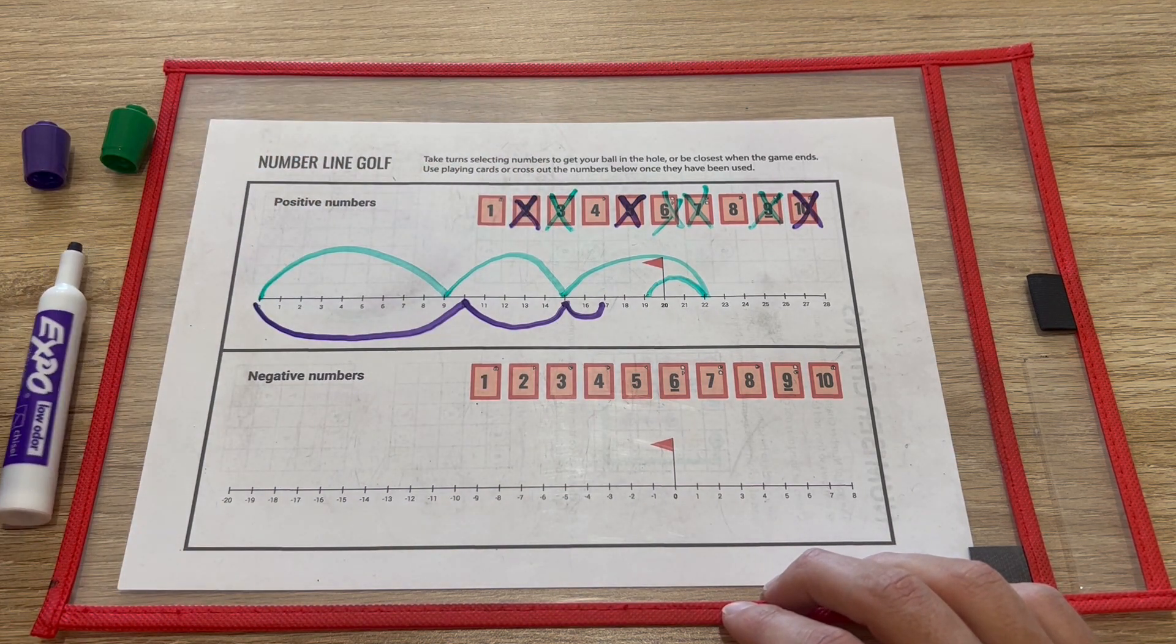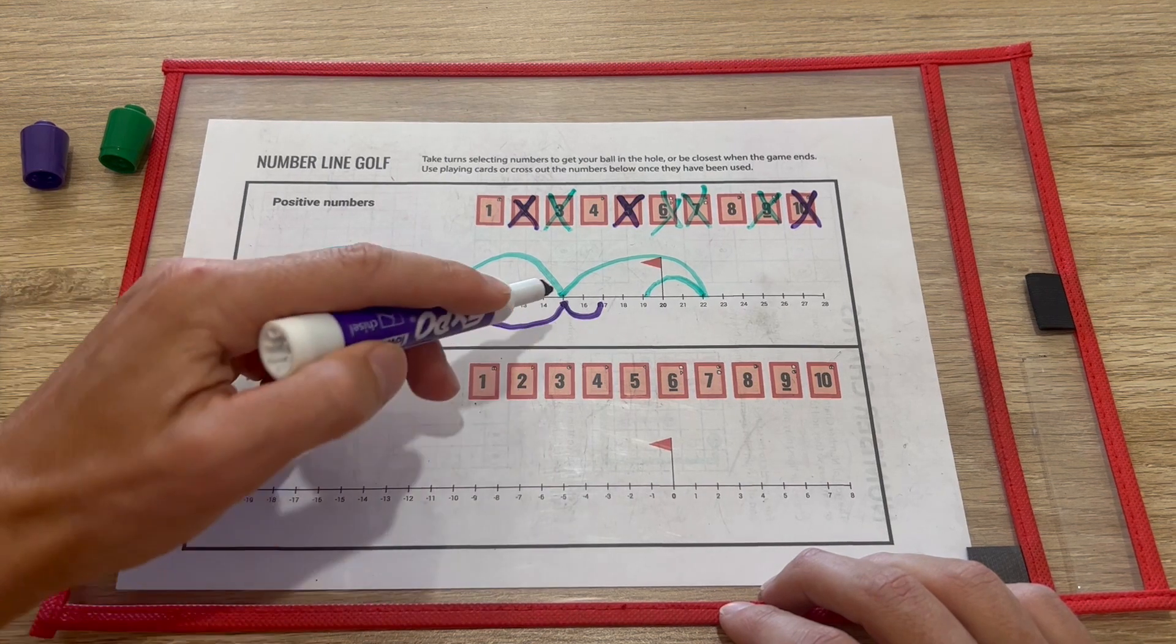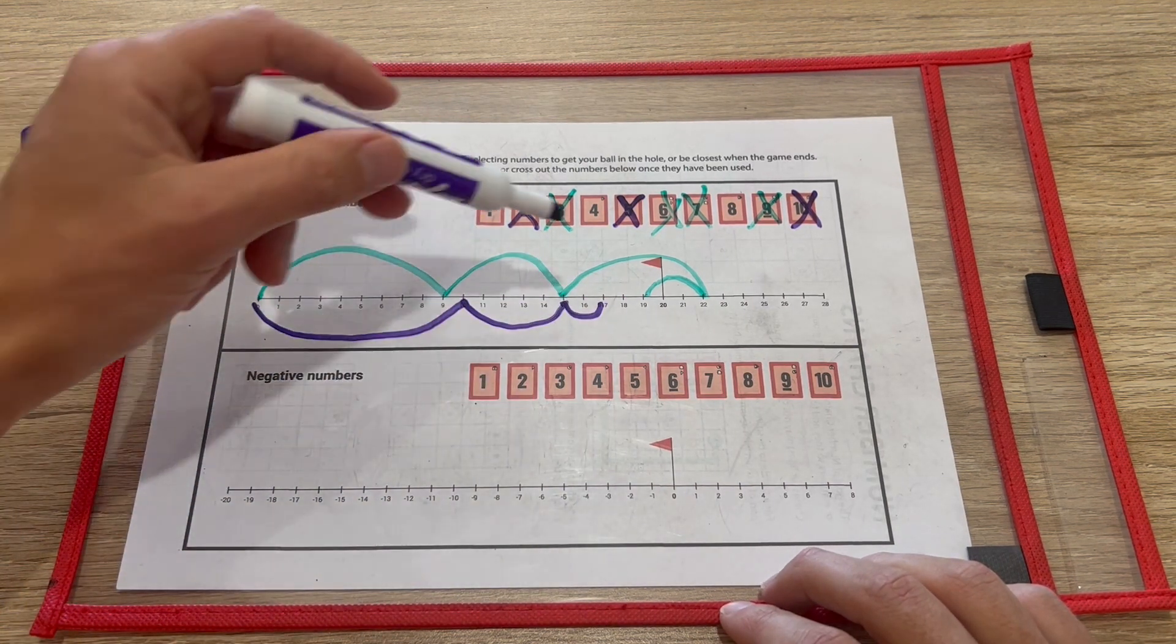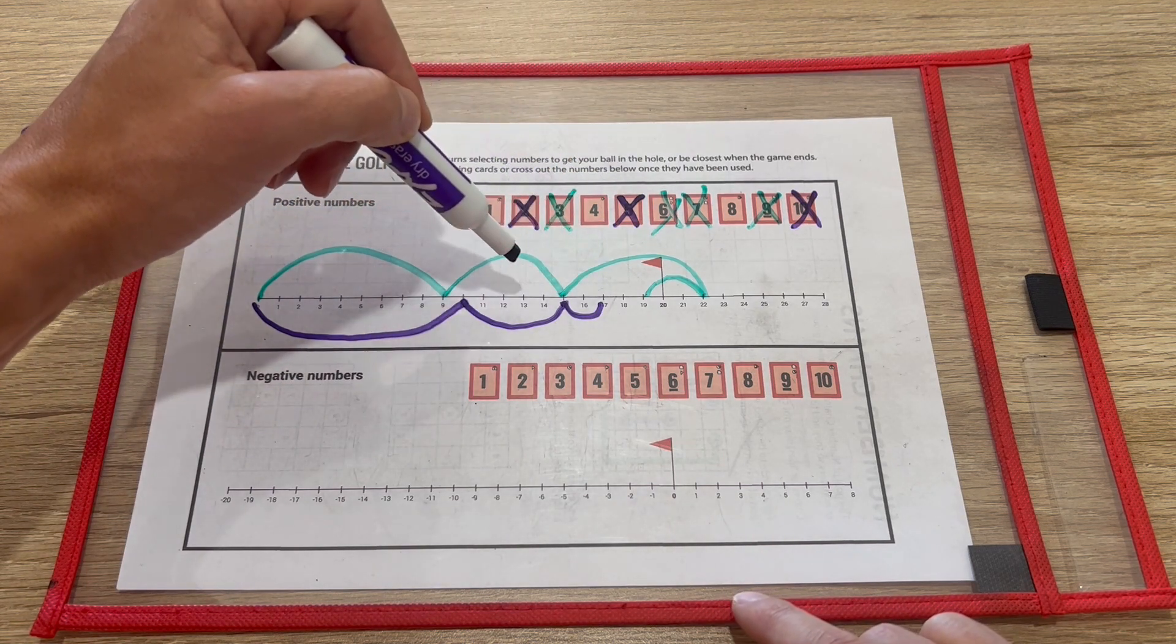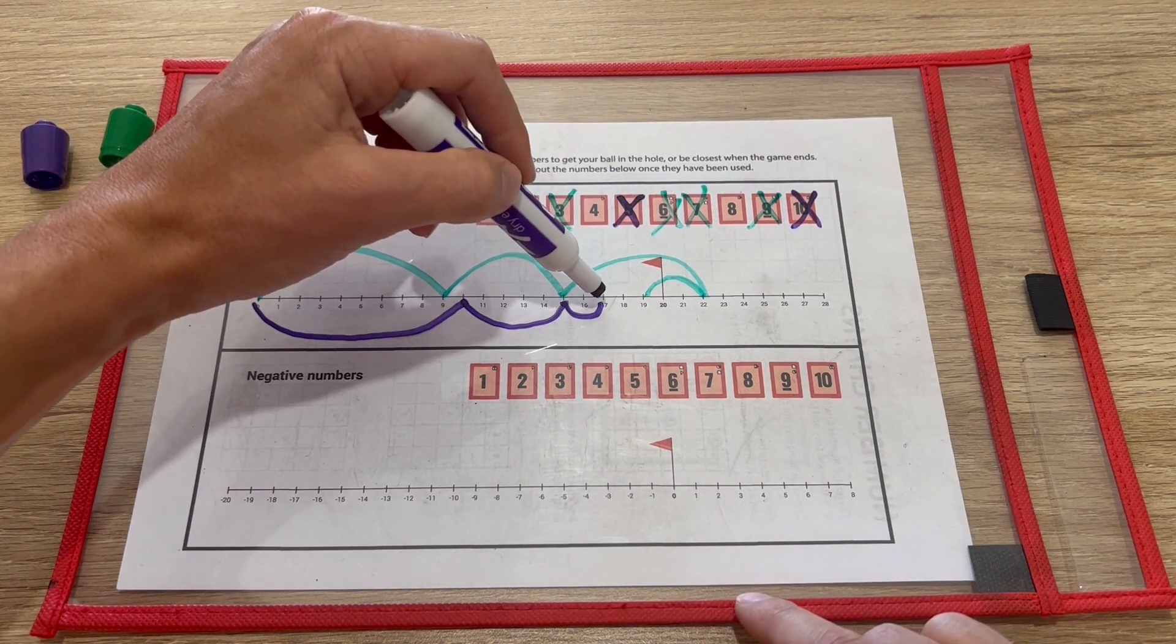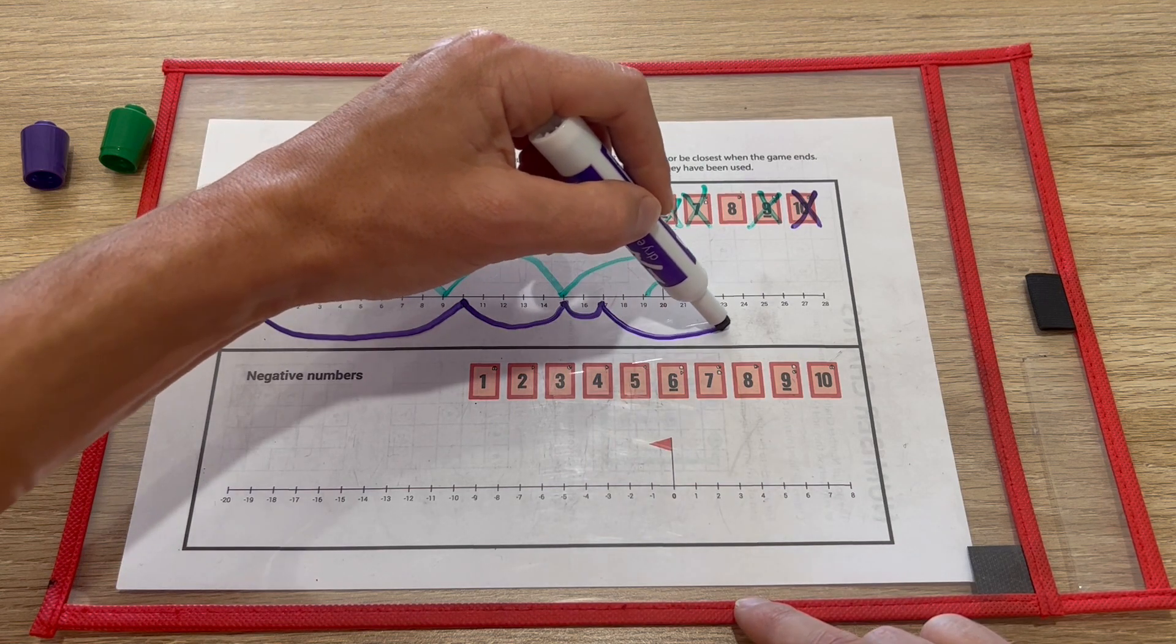And now purple can either pick a 1 or a 4, I mean they could pick an 8 now and then try to work backwards, and maybe they would even do that because they know that they're going to get stuck. But then let's just do that, so they'll pick the 8 and go to 25.